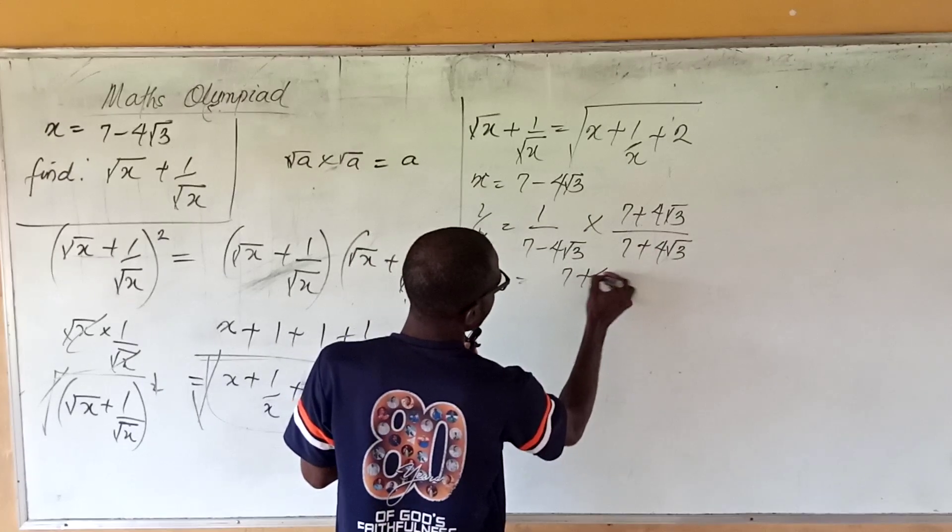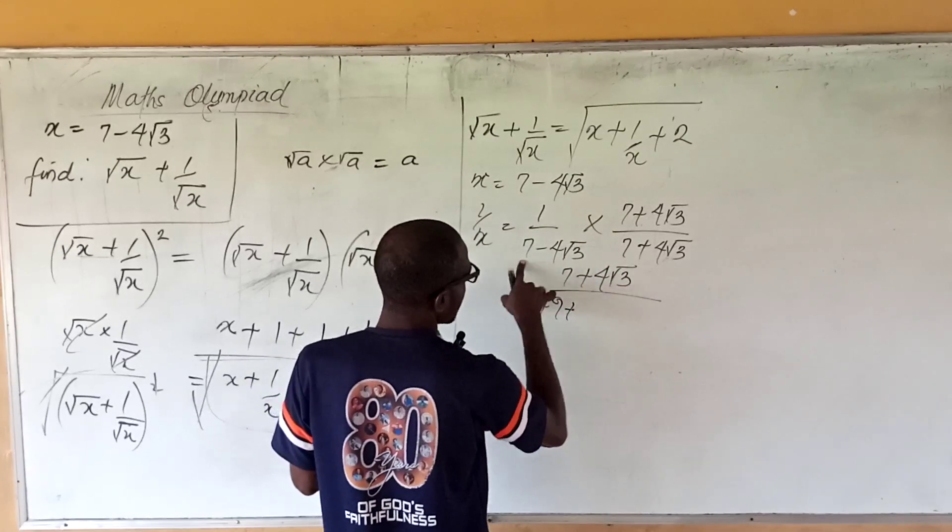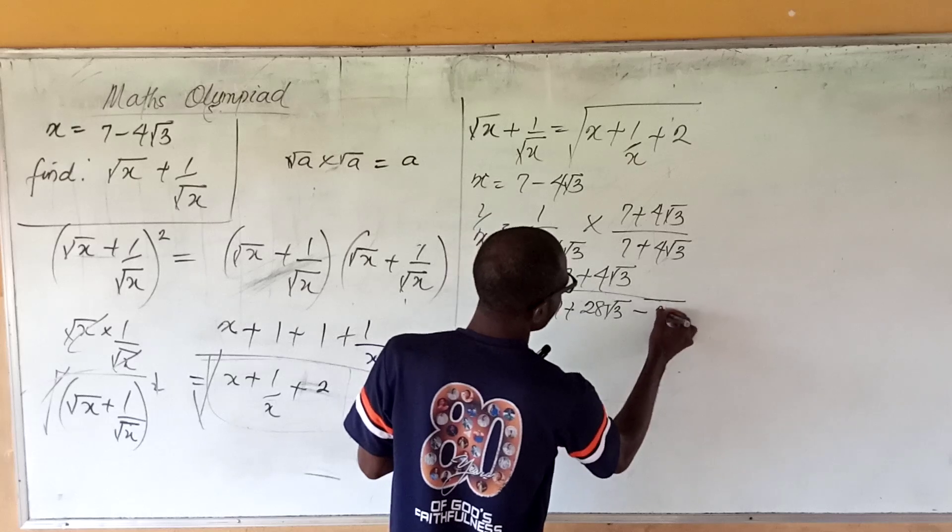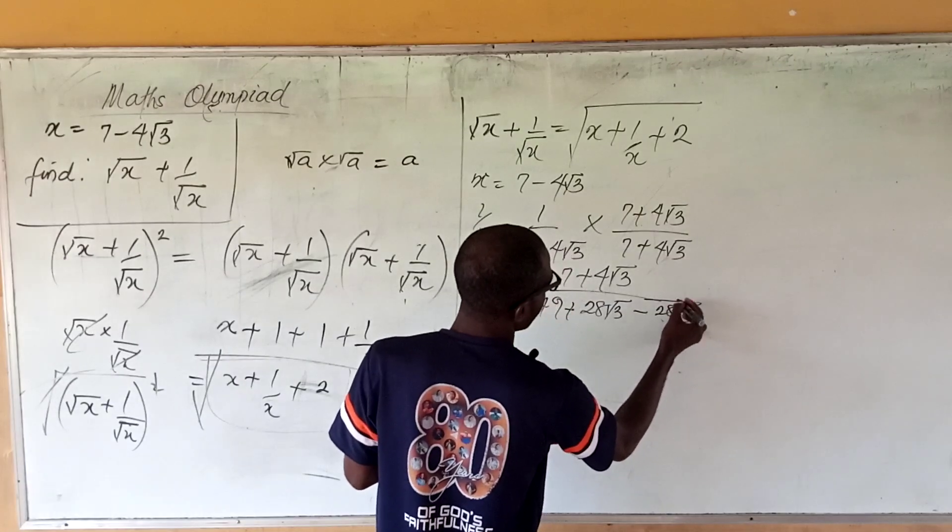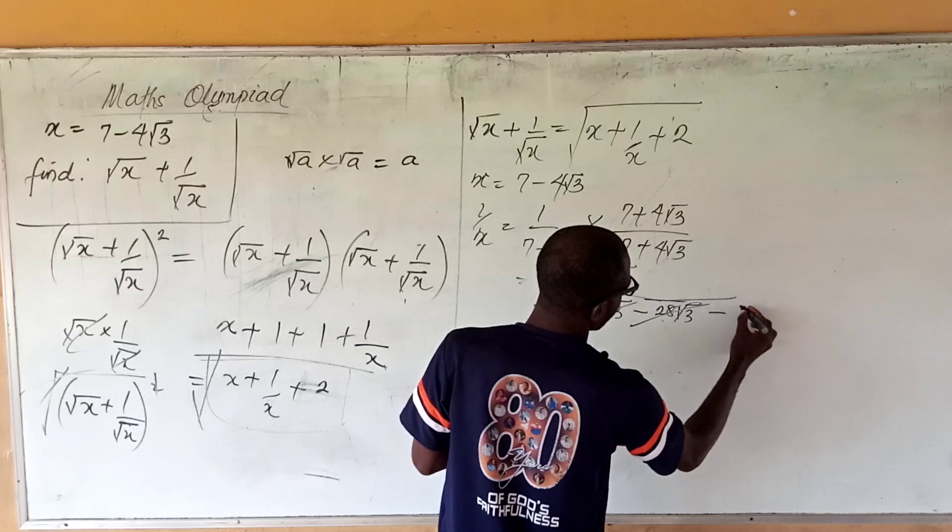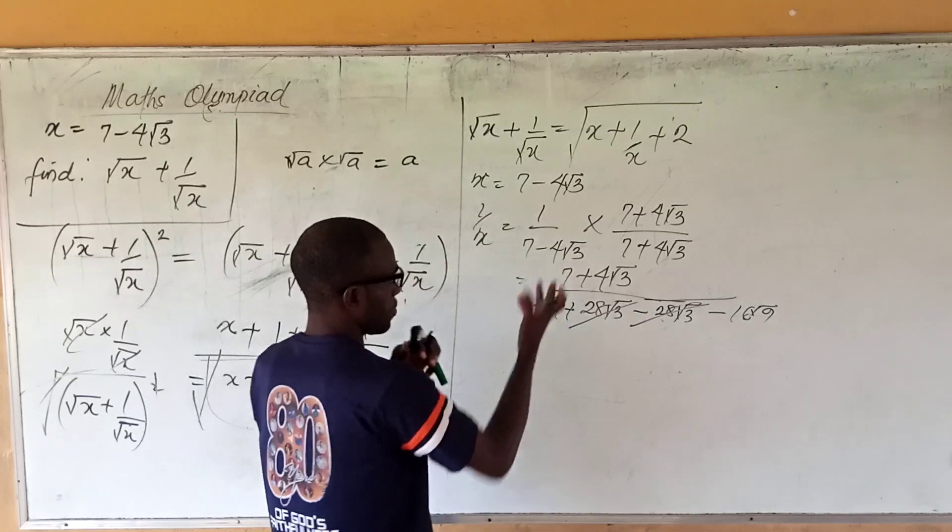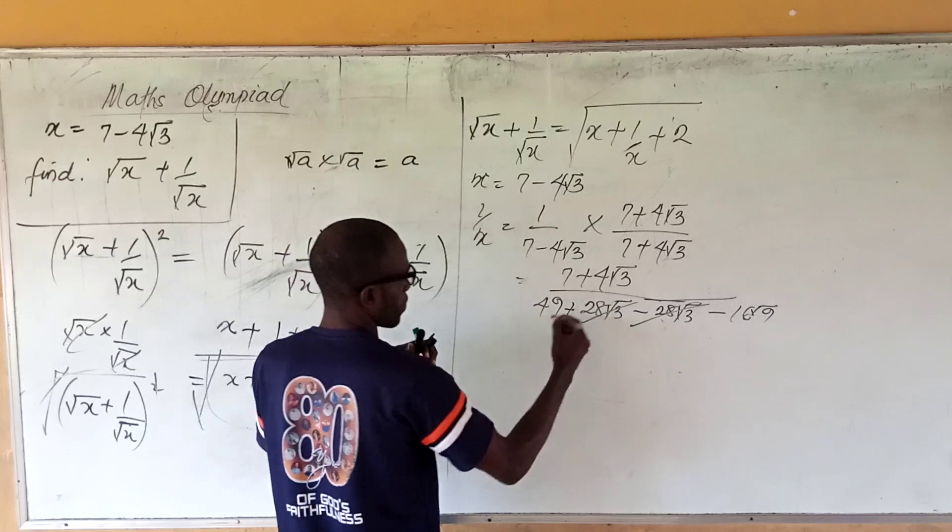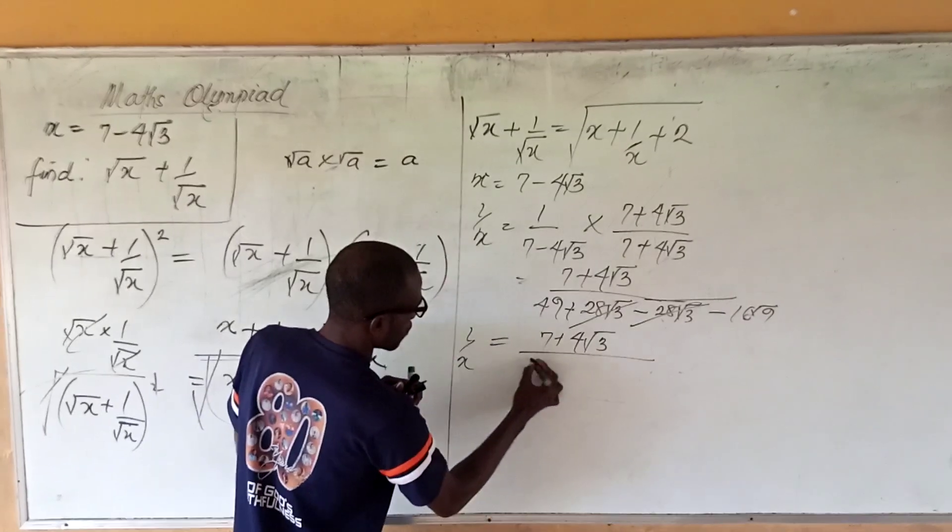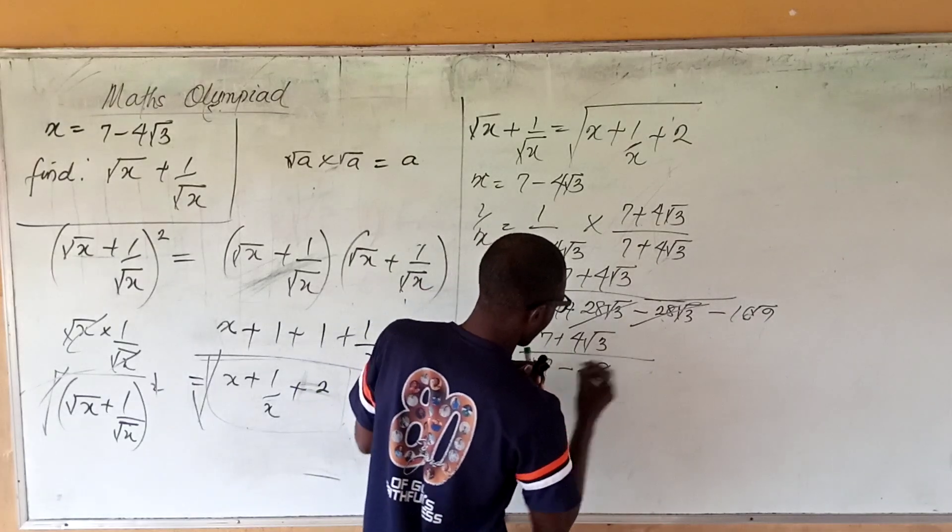So then I can simplify this. This becomes (7 + 4√3) all over this times this gives me 49, plus this times this gives me 28√3, then this times this gives me minus 28√3. So this place always cancels right. Then this times this is going to give me 16 times 3, 4 times 4 is 16. So 1/x equals (7 + 4√3) all over 49 minus 16 times 3. 16 times 3 is 48.